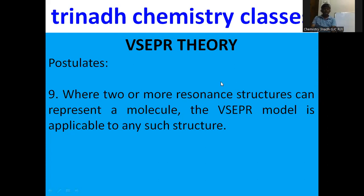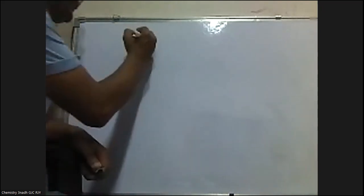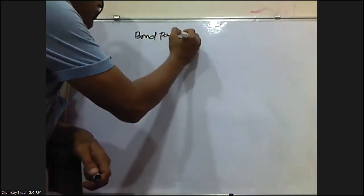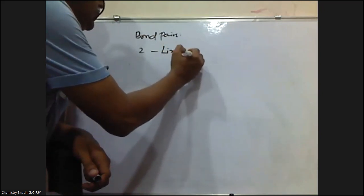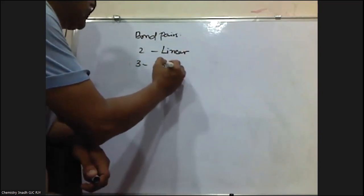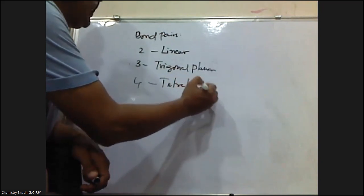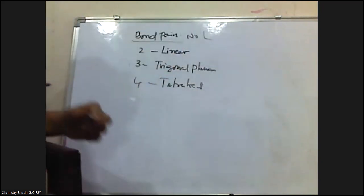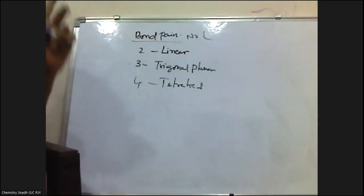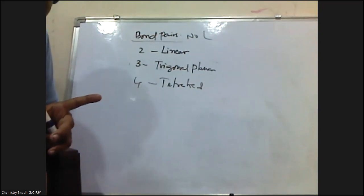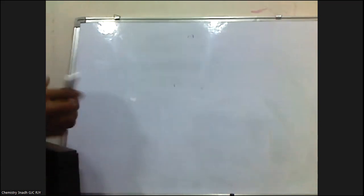These are the important postulates of Valency Shell Electron Pair Repulsion theory. As discussed, if there are only two bond pairs and no lone pairs, the shape is linear. Three bond pairs gives trigonal planar, four bond pairs gives tetrahedral — these are the idealized shapes based on VSEPR theory. Five bond pairs gives trigonal bipyramidal, and six bond pairs gives an octahedral shape.